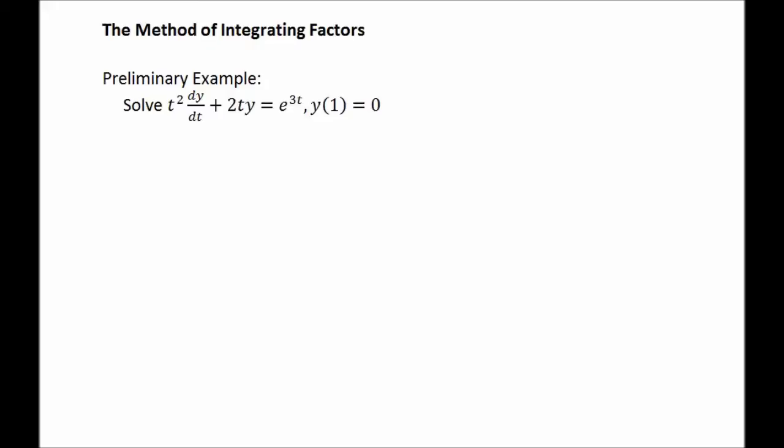Let's begin by trying to solve the differential equation t squared dy/dt plus 2ty equals e to the 3t, subject to the initial condition y(1) equals 0.